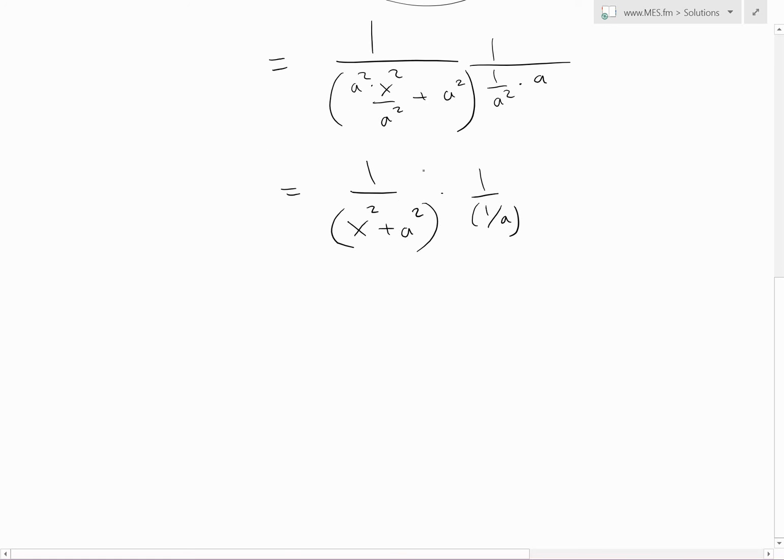This is the same thing as putting it on top. So this equals a divided by x squared plus a squared. And then the left side, that's just d over dx of inverse tan of x over a.